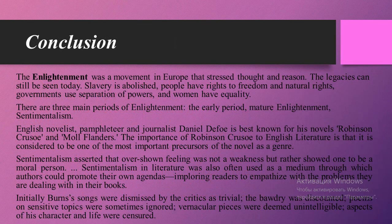In conclusion, the Enlightenment was a movement in Europe that stressed thought and reason, and its legacies can still be seen today: slavery was abolished, people have rights to freedom and natural rights, governments use separation of powers, and women have equality. There are three main periods of English Enlightenment: the early period, mature Enlightenment, and sentimentalism.